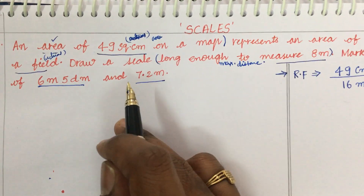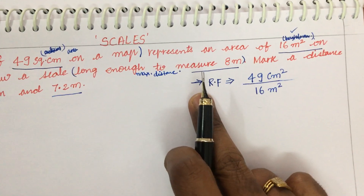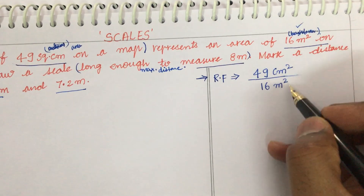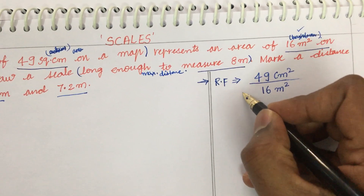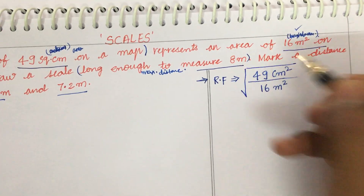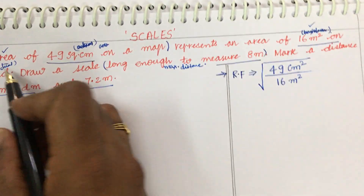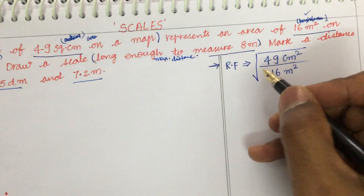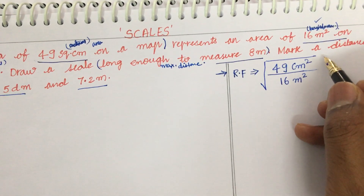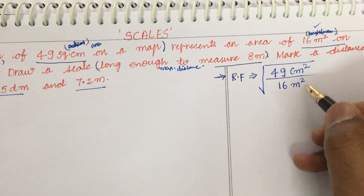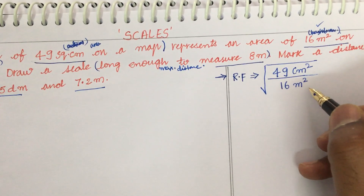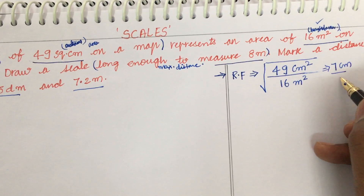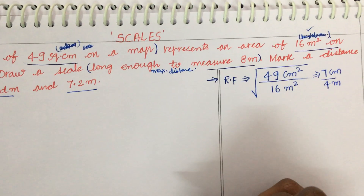Before identifying the scale type, let us work out the RF. I have written it as the square root of 49 over 16, because when quantities are given as areas we need to convert them to linear quantities by taking the square root. For volumes, we would take the cube root. This gives us 7 centimeters divided by 4 meters.